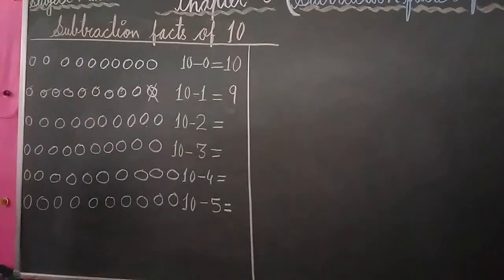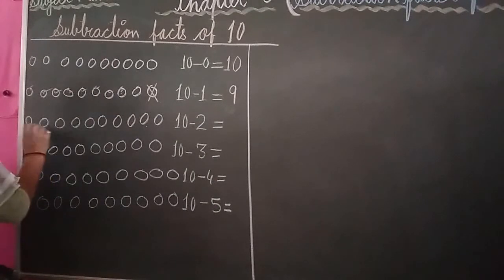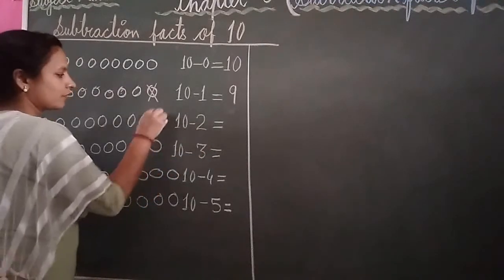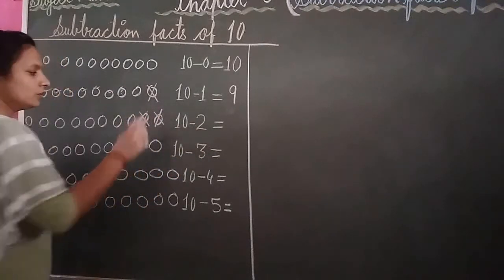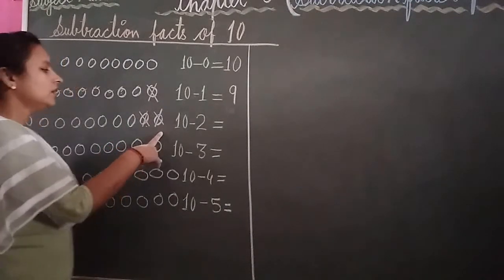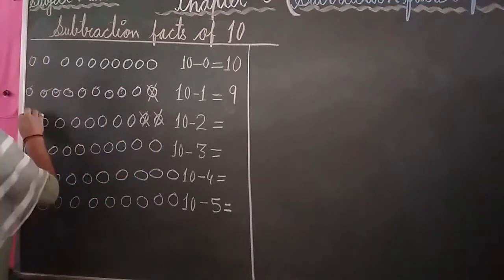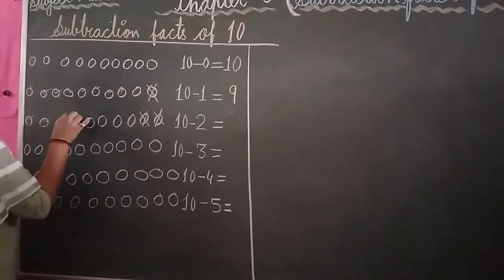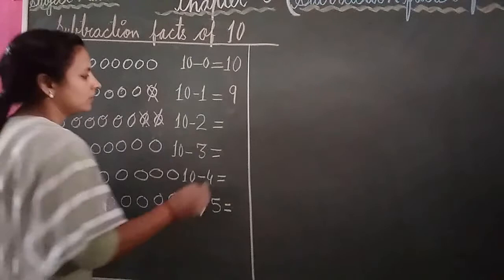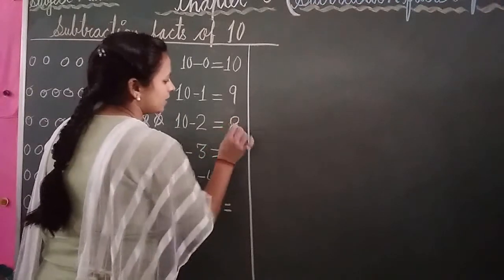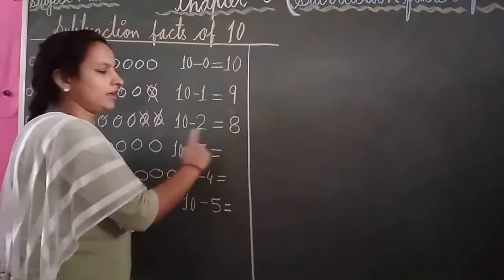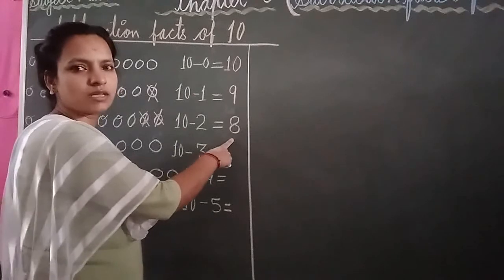Again draw your 10 balls. Write: 10 minus 2. Cut and cross out 2 balls: 1, 2. Count the balls left: 1, 2, 3, 4, 5, 6, 7, 8. How many balls are left? 8. The answer is 8. 10 minus 2 equal to 8.